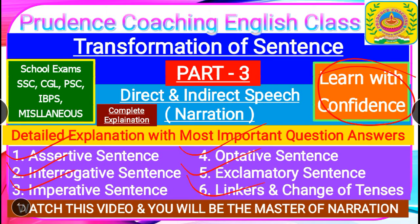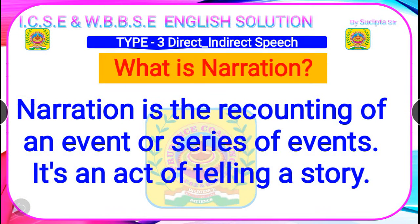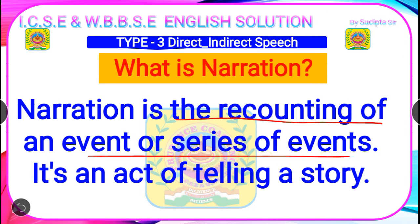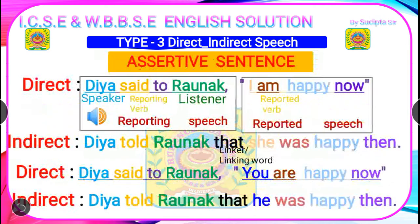First of all we need to know what is narration. Narration is the recounting of an event or series of events — it is a kind of storytelling technique. Now we'll go to the content. We have provided you the pattern for narration for the assertive sentence. An assertive sentence states any simple statement, any habitual truth, or any universal truth of our daily life.